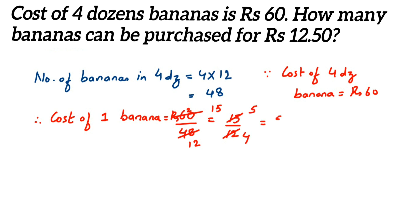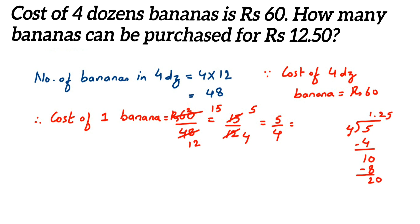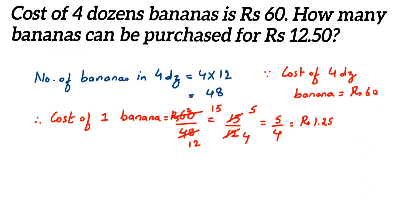So if I convert 5 by 4 into a decimal: divide 5 by 4 — four ones are four, one is a remainder, use a decimal point, we get 10, four twos are eight, two is a remainder, use zero, four fives are 20 — so it is rupees 1.25, which is 1 rupee 25 paise. That is the cost of one banana.